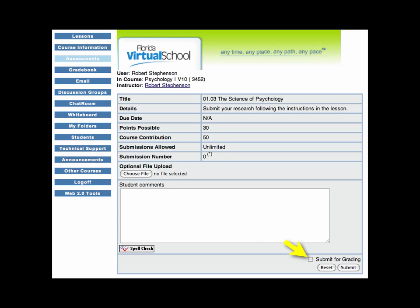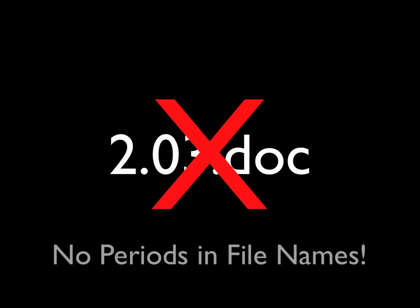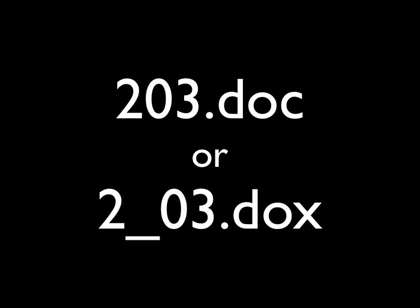Once you are ready to send an assessment to your instructor, make sure you click the Submit for Grading button. Assessments are graded within 48 hours of submission and you will find your graded work in the Gradebook toolbar. Your Gradebook acts as your binder where you can always refer back to previous assessments for review. Please do not use periods when naming files — simply name a file 203 or 2_03 rather than 2.03, as these periods create problems for the system and your assessment may not attach correctly.